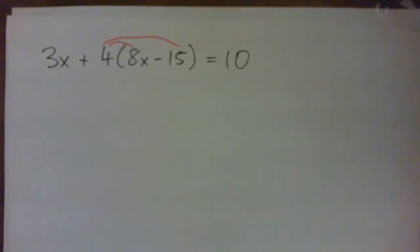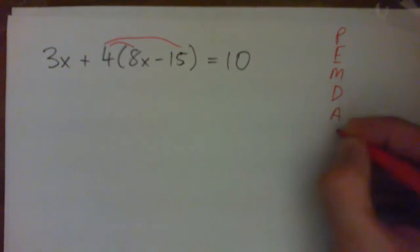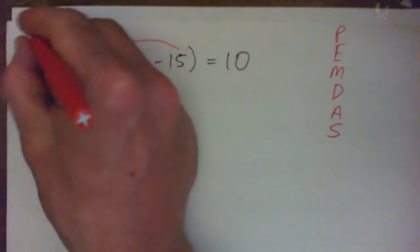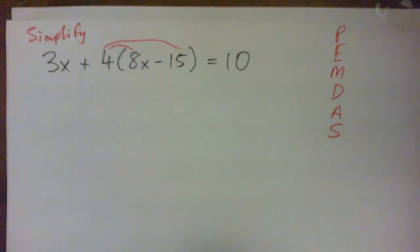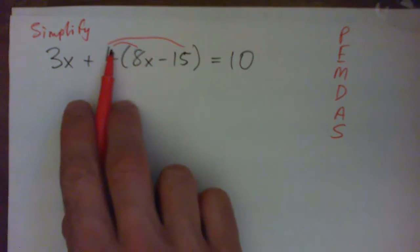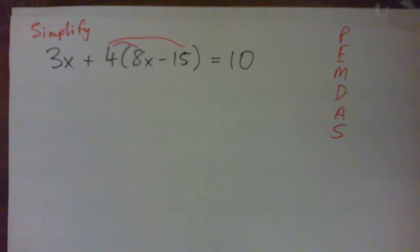So it's kind of a PEMDAS rule there in a way, because you've got to multiply before you can add when you're simplifying. So the first thing we're doing here is we're simplifying, right? So let's go write this out and just go ahead and write down what you get for this. 4 multiplied by 8x minus 15. Just go ahead and write it out. Press pause on the video, anyone watching from home, if you need more time.